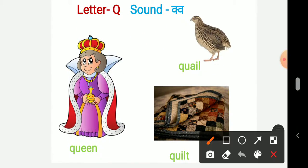Now this is letter Q and its sound is Quir. First picture is about Queen. Q-U-E-E-N Queen. The second picture is about Bird Quail. Q-U-A-I-L Quail.